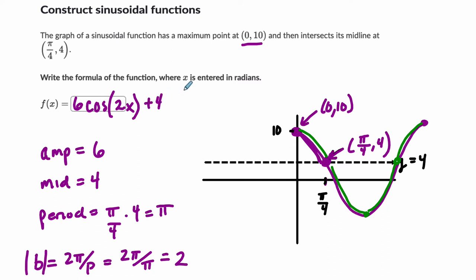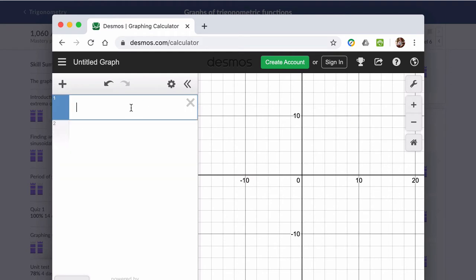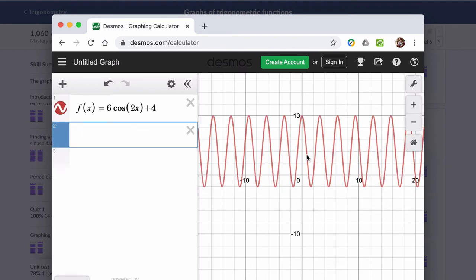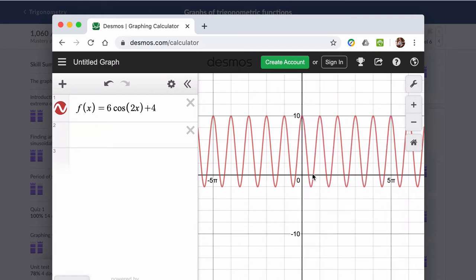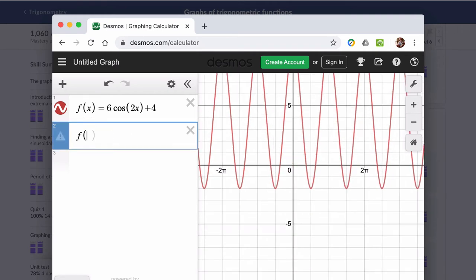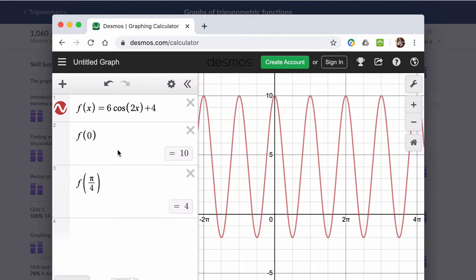Now I would encourage you to check this in Desmos. In Desmos, I'm going to type f of x equals 6 cosine of 2x plus 4. And I can look at the graph, I can press this wrench and make the steps on the x-axis pi. This is why I type f of x - I can type in f of 0 and f of pi divided by 4, and I'm getting the points I need. I was told that when the input is 0, the output is 10, and when the input is pi over 4, the output is 4. I can see that here in the graph.